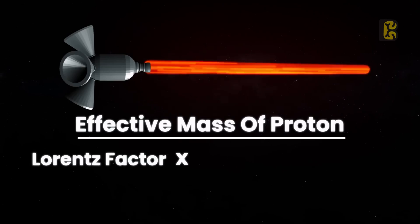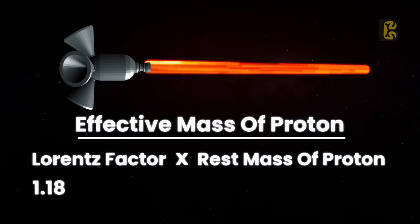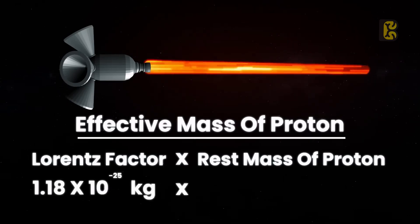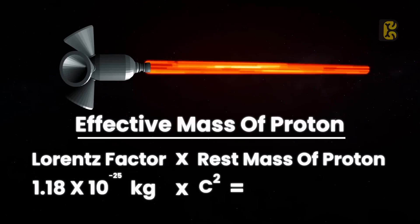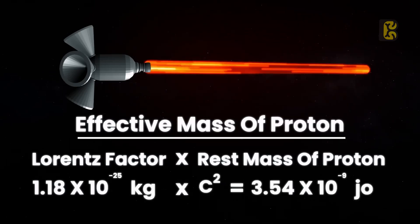In the relativity equation, we need to use the effective mass instead of the original mass of the proton, which would be the Lorentz factor multiplied by the rest mass of the proton. When we multiply both, we get a value of 1.18 into 10 to the power minus 25 kilograms. When we multiply this by c squared, we get the value of 3.54 into 10 to the power minus 9 joules.